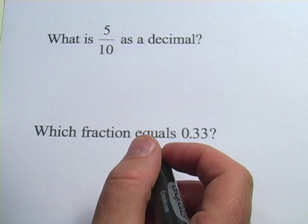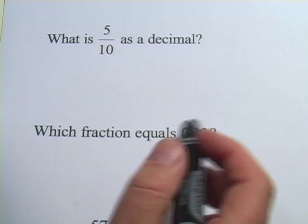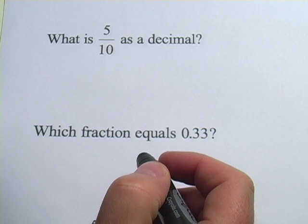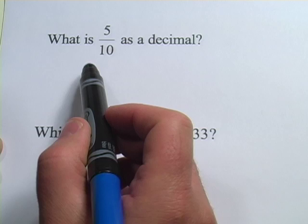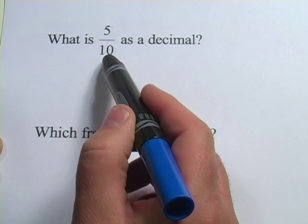In these problems, we're being asked to write fractions as decimals and decimals as fractions. When you're going from a fraction to a decimal, there's a foolproof way to do it: you just divide.